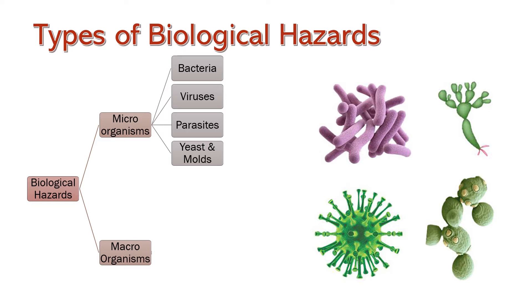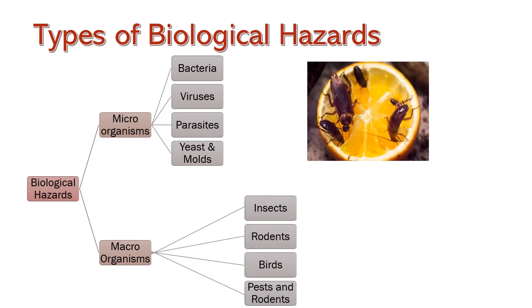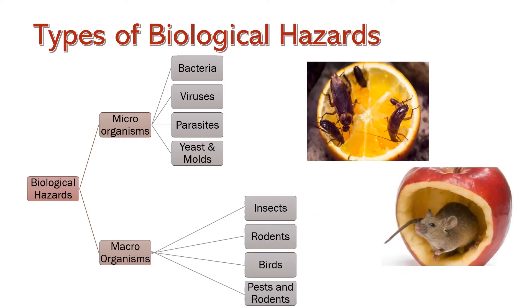The second category of biological hazards is macro-organisms, like insects, flies, cockroaches, ants, rats and rodents. These organisms basically work as carriers for the transportation of pathogenic microorganisms.